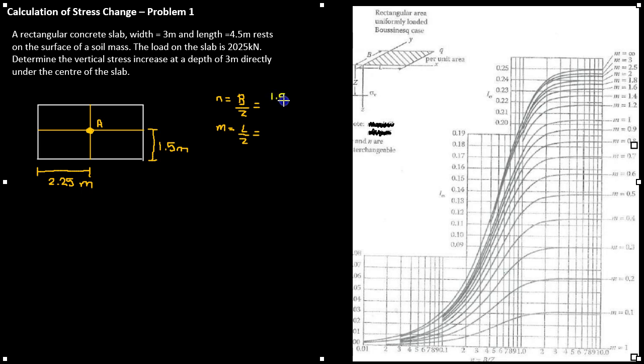We can now calculate our values for N and M. N equals 1.5 divided by 3 equaling 0.5. M equals 2.25 divided by 3 equaling 0.75.